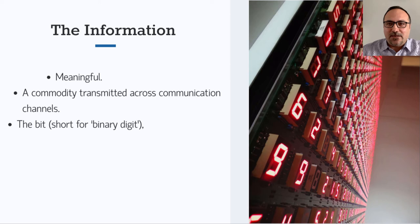In ordinary language, information is meaningful. Consider the statement: the average winter temperature in Dublin is five degrees Celsius. This type of information tells us something about the climate in Dublin. However, the word information means something very different for communication engineers. In information theory, information is simply a commodity transmitted across communication channels such as telephone lines.